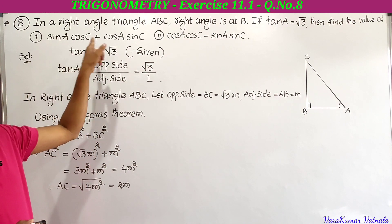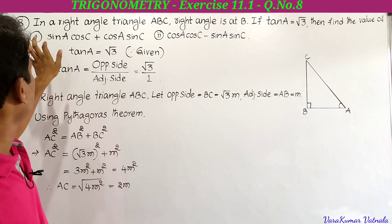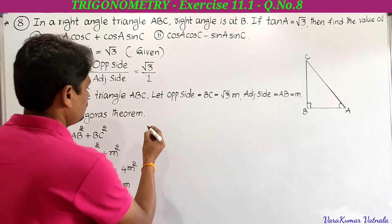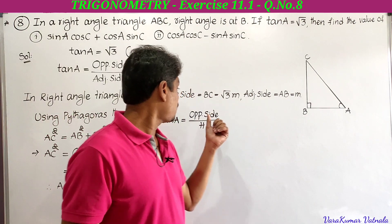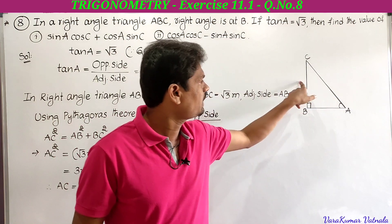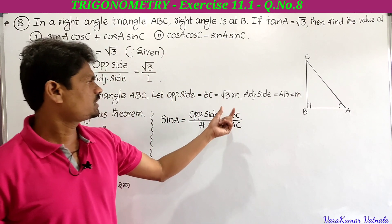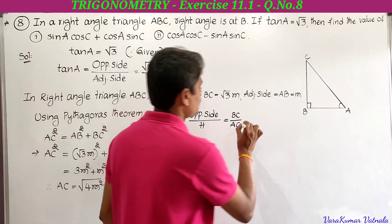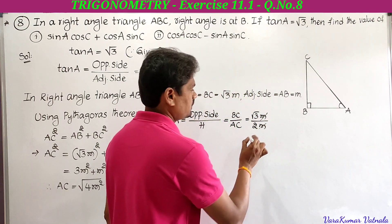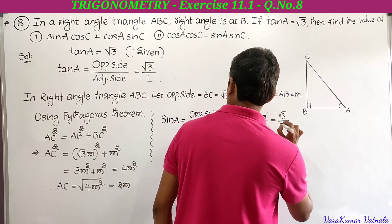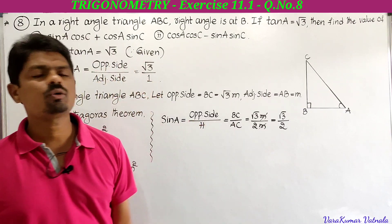To find the first expression, sin A cos C plus cos A sin C, we need sin A, cos A, sin C, and cos C. Sin A equals opposite side to angle A divided by hypotenuse, that is BC by AC, which is root 3M by 2M. The M's cancel giving sin A equal to root 3 by 2.